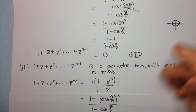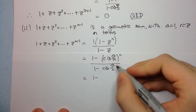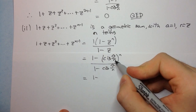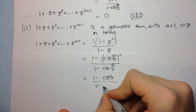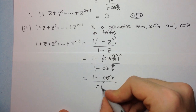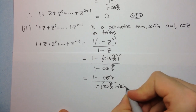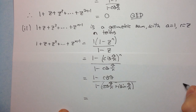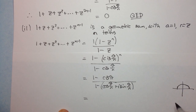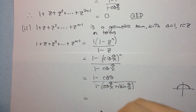Applying De Moivre's theorem, cis(π/n)^n = cis(π). So we have (1 − cis(π)) / (1 − cis(π/n)). Now I'll write cis in expanded form. cis(π) goes to the negative real axis, so it equals −1. The numerator becomes 1 − (−1) = 2.